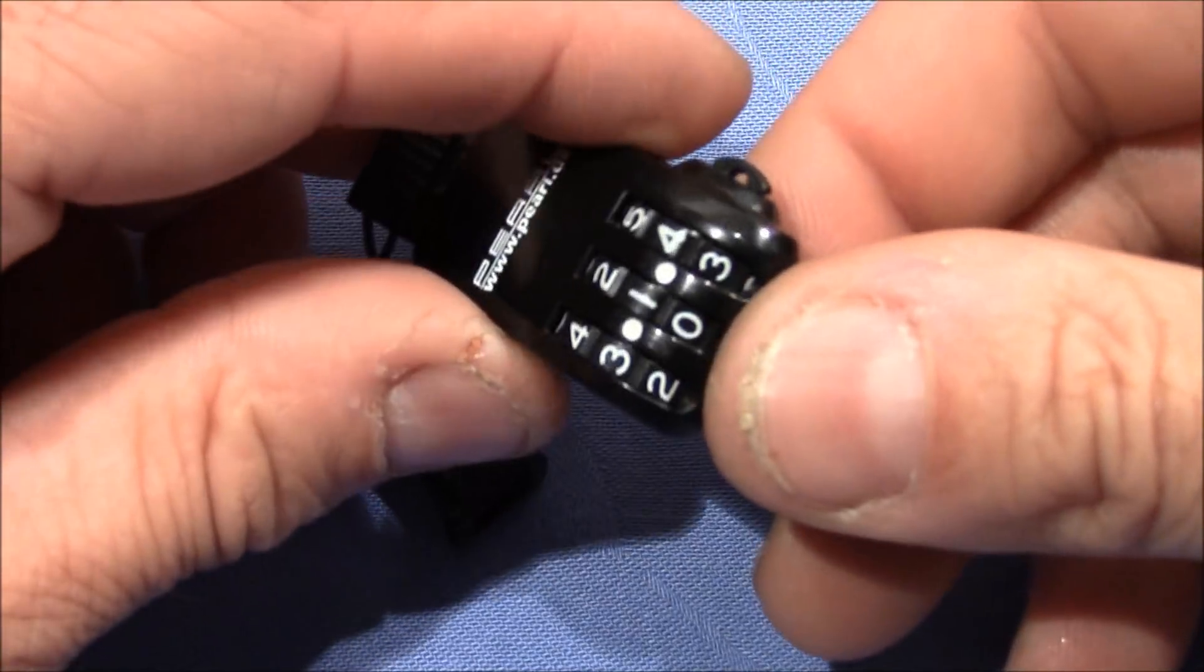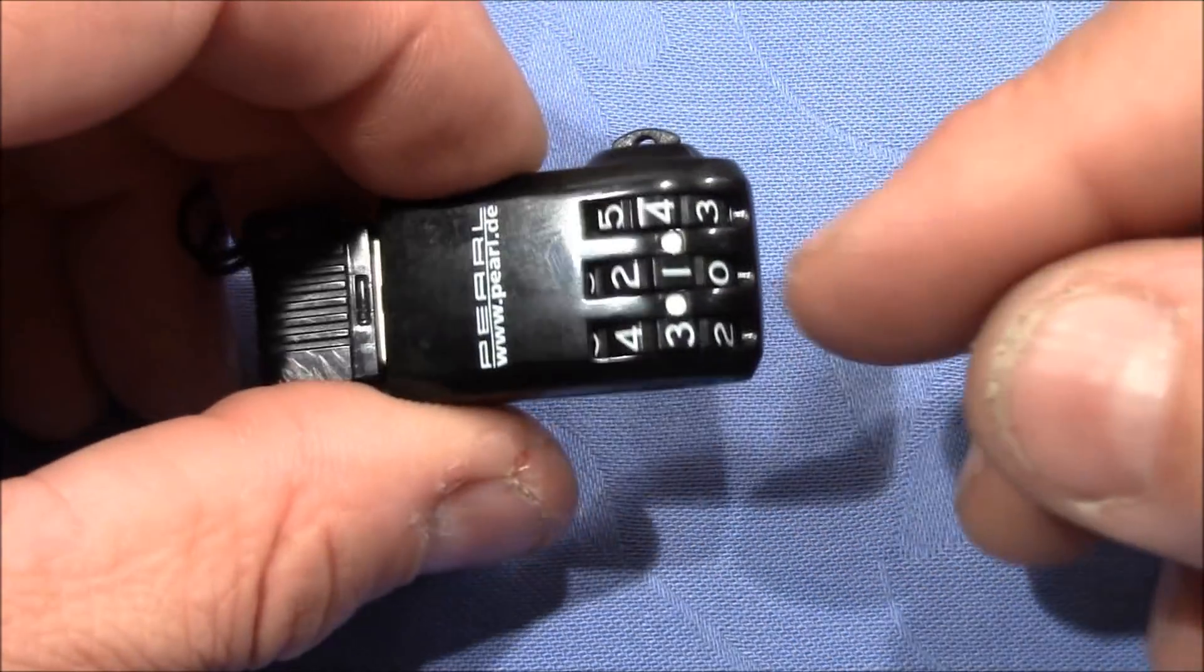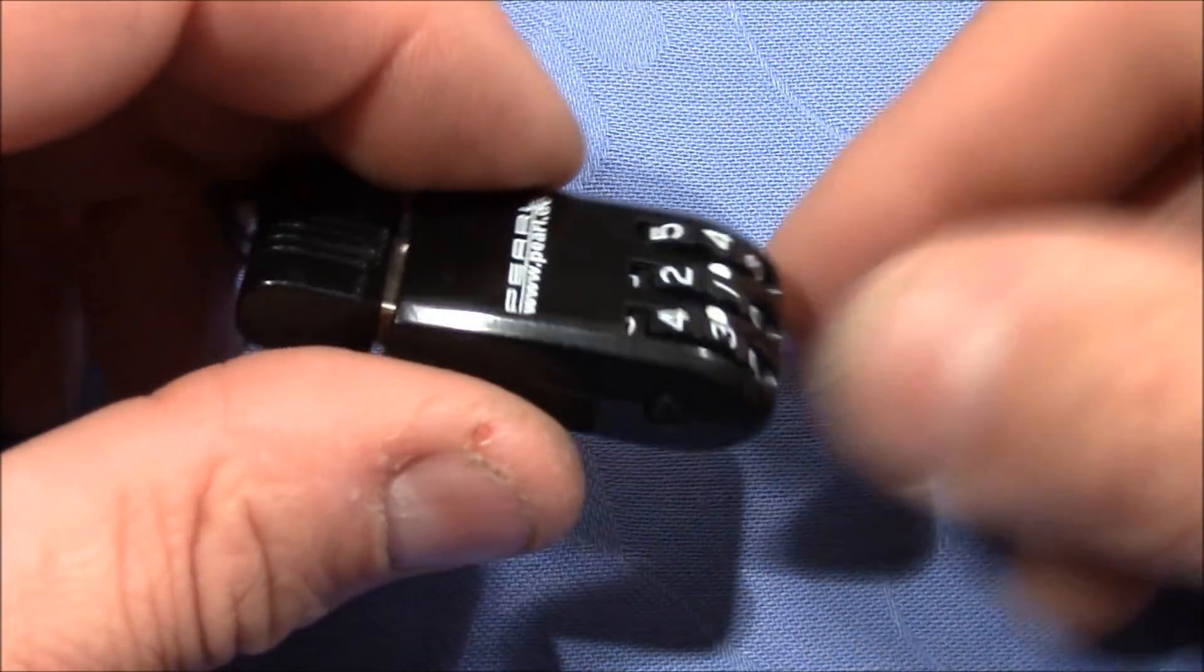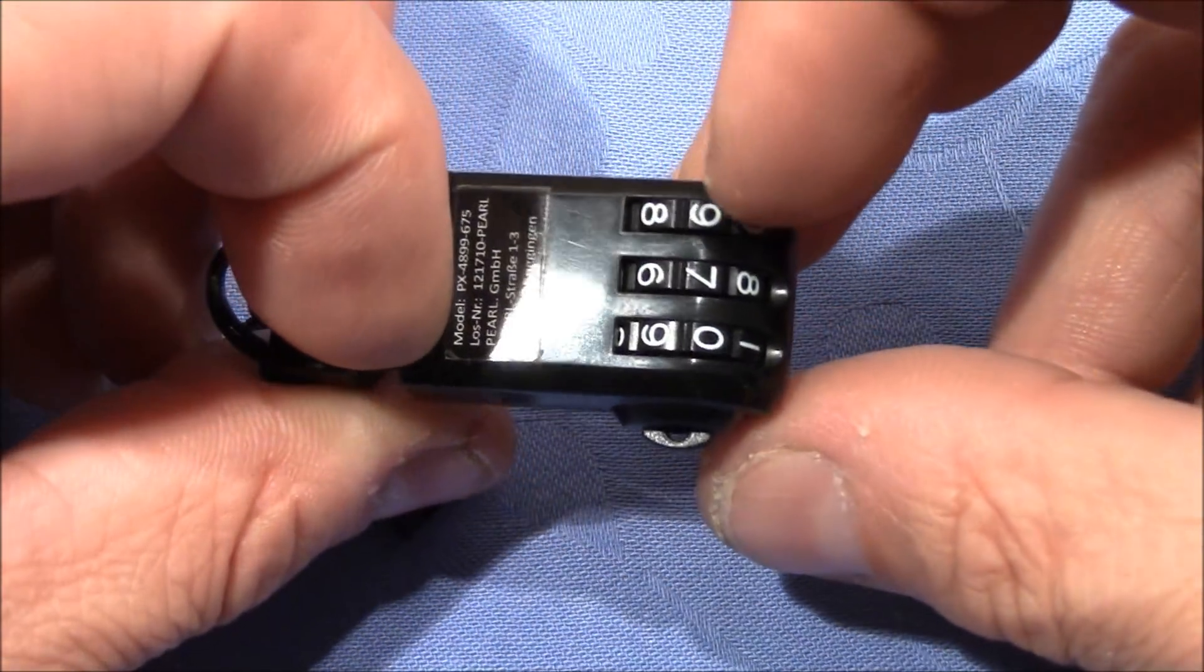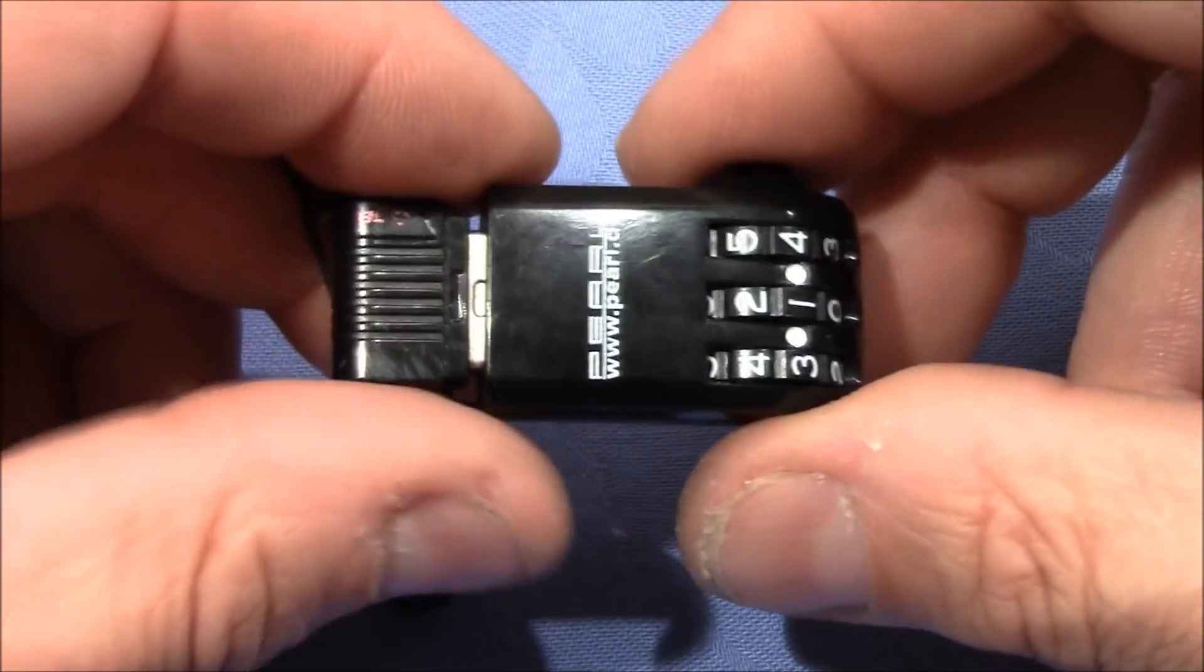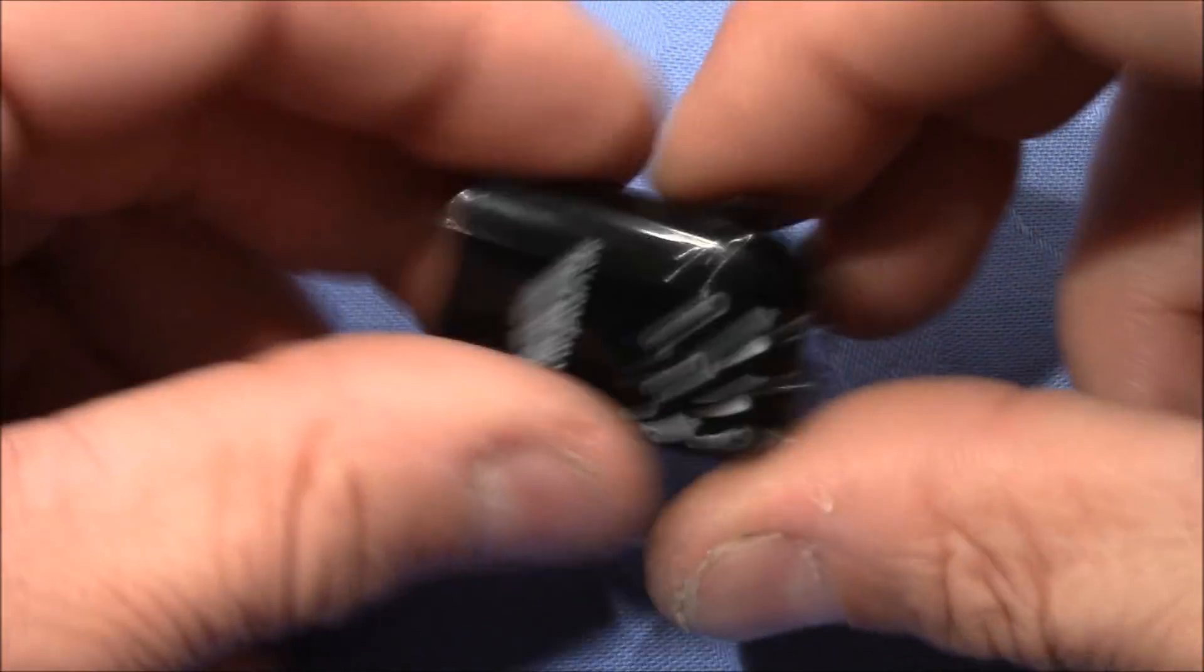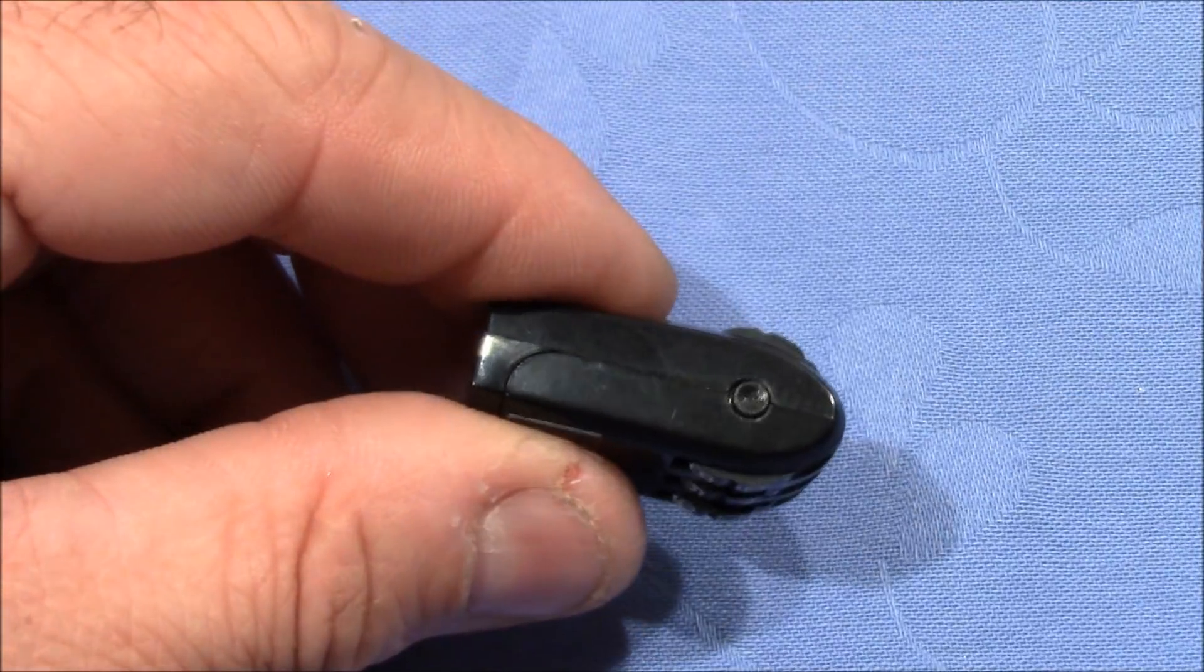By using a very thin piece of metal, we can feel maybe gates that are in the lock at the inner wheels, and so then we can decode this lock. I'm going to change the combination now and we will try it.